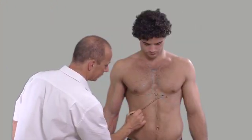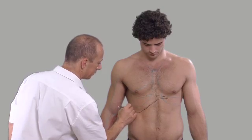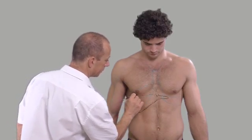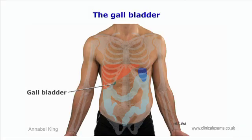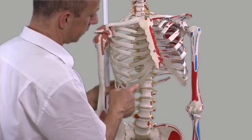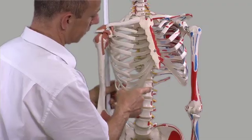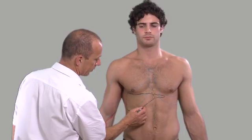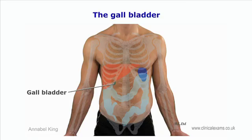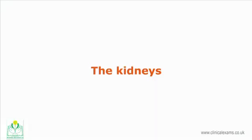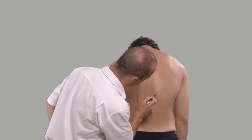The gallbladder is a small sac-like structure mostly tucked behind the liver, about three centimeters in diameter. It projects slightly below the right costal margin and is not normally palpable, although it may be sensitive when inflamed — this is referred to as Murphy's sign.